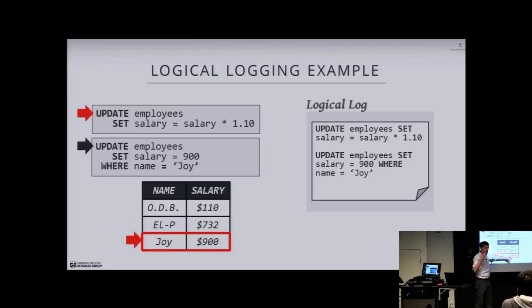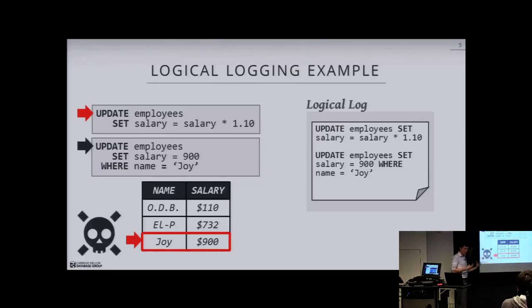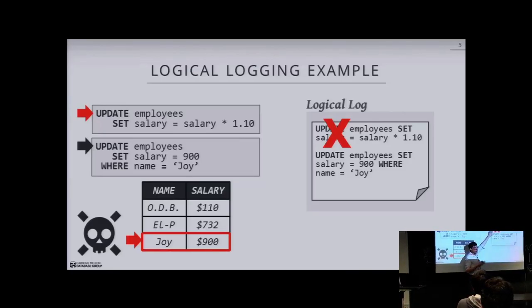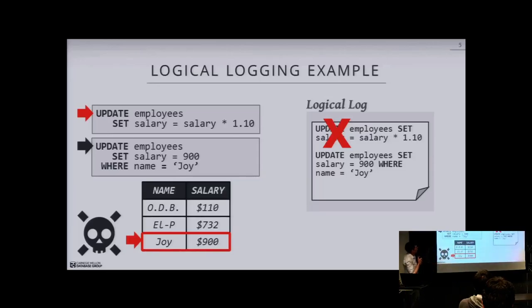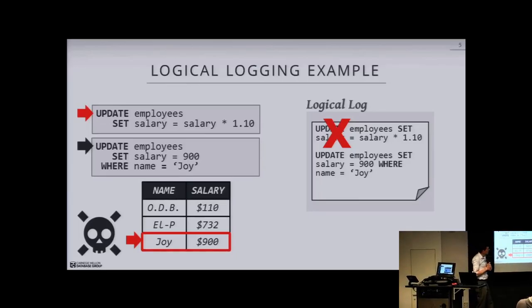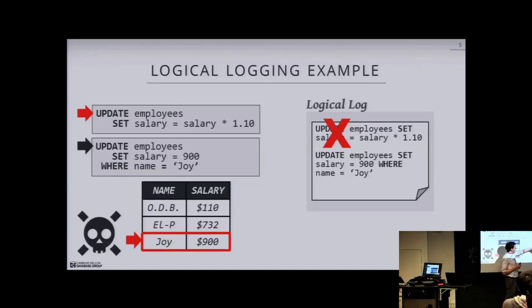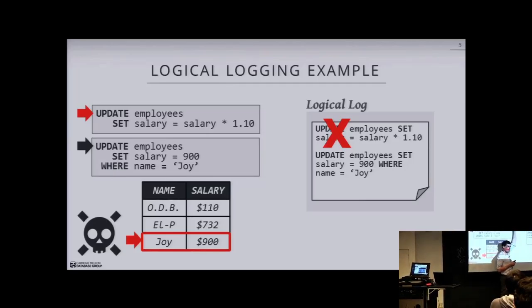But before we could get to the third tuple, we have a context switch and the other query starts running. We append it to our logical log, it modifies that tuple and sets Joy's salary to $900, then commits. When we go back to continue our query, we see it's been modified since we started, so that transaction cannot complete — it would have to abort and roll back changes. We'd have to be able to remove this entry from the log; since the transaction hasn't committed yet, we keep it in memory and blow it away on abort.